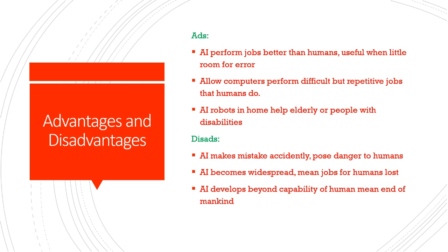And if it's a very difficult job, we also know that A.I. will perform better, and therefore there's less chance of human error. The final advantage is that A.I. robots in the home can help the elderly or people with disabilities. The disadvantages are that if an A.I. makes a mistake, it can pose a danger to humans. If A.I. becomes widespread, jobs will be lost for humans. And if A.I. develops beyond the capability of a human, then it can mean the end of mankind — a bit far-fetched, but a disadvantage nonetheless.